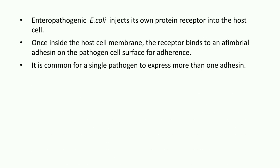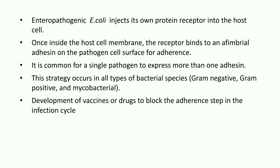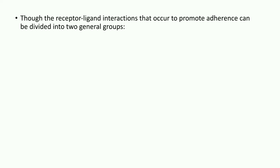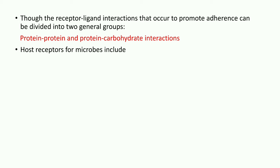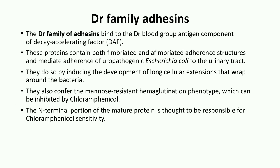It is common for a single pathogen to express more than one adhesin. This strategy occurs in almost all types of bacterial species including gram-negative, gram-positive, as well as mycobacterial species. A number of vaccines and drugs which block the first step — that is, adherence — are newly developed drug targets. Though the receptor-ligand interaction occurs to promote adherence, it can be divided into two general categories: protein-protein and protein-carbohydrate interaction. Host receptors for microbes include membrane-spanning proteins, surface immunoglobulins, glycolipids, glycoproteins, and extracellular matrix proteins.